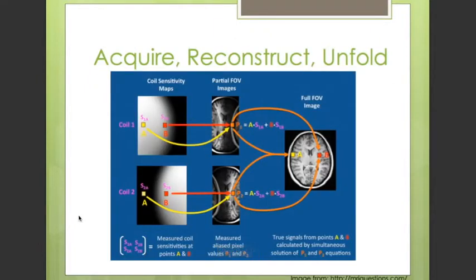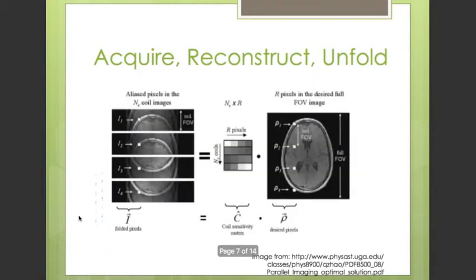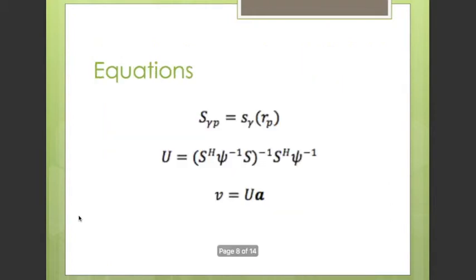In order to start unfolding, the first step is to create the sensitivity matrix S. This matrix is limited by NP and NC, which are the number of superimposed pixels and number of coils used, respectively. It is important to note that the number of pixels to be unfolded is bounded by the number of coils used. The sensitivity matrix can be written as shown in the figure, where S(Y) represents the spatial sensitivity of the coil at position Y.